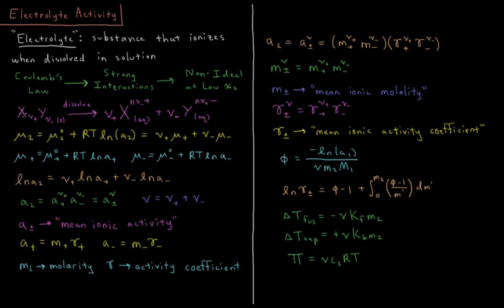Consider an electrolyte X_(ν+) Y_(ν−) as a solid, where X might be a metal and Y a halide or other salt anion. They start as a solid salt. There are ν+ of the cation and ν− of the anion — those are the stoichiometric coefficients. When dissolved, there are ν+ cations of X in aqueous solution plus ν− anions of Y in aqueous solution.